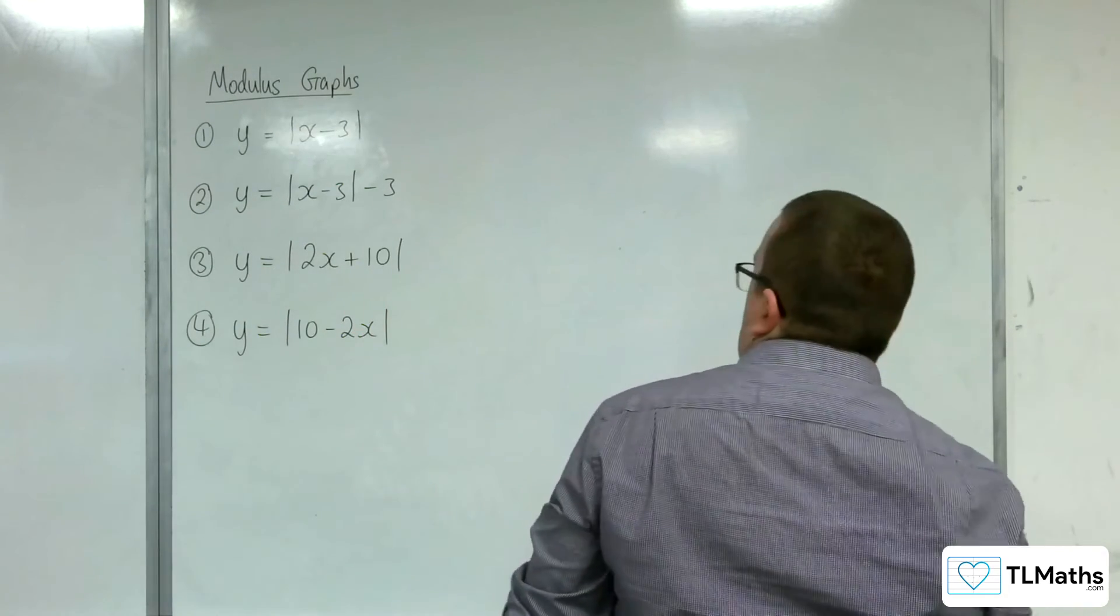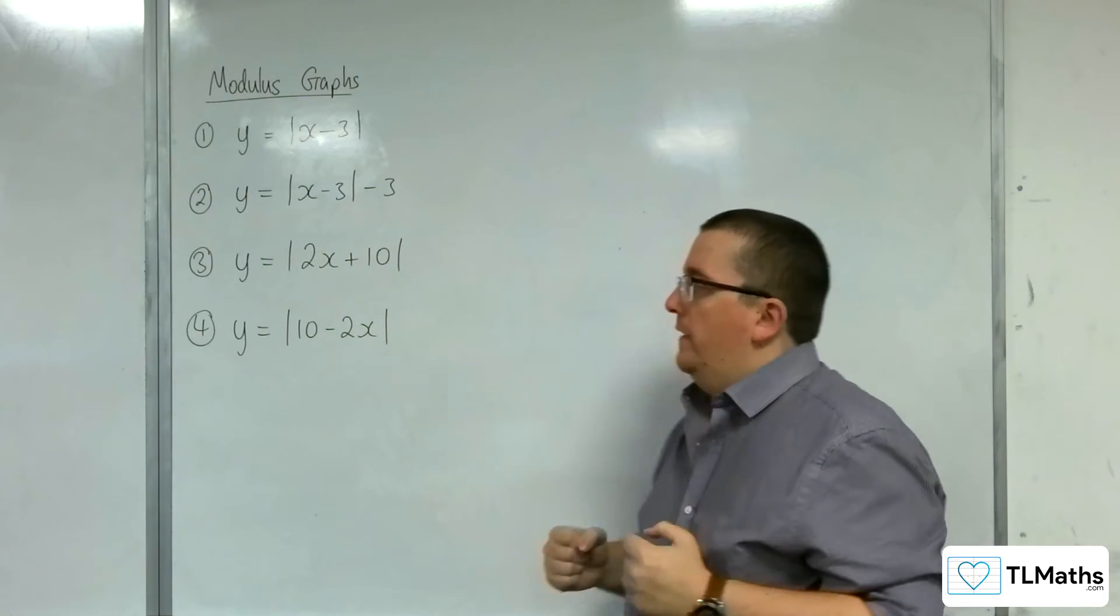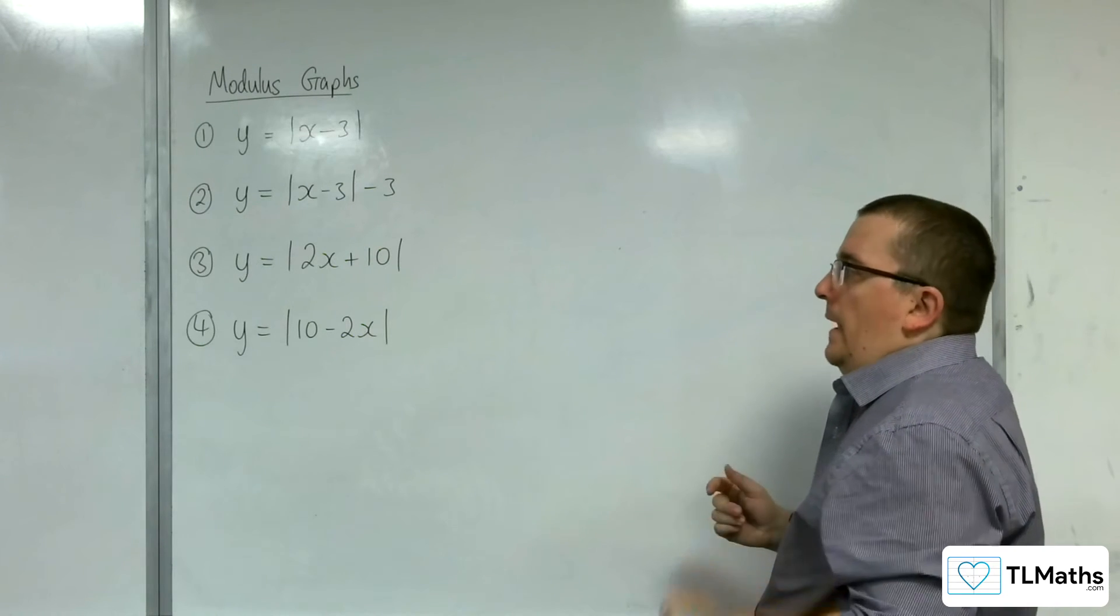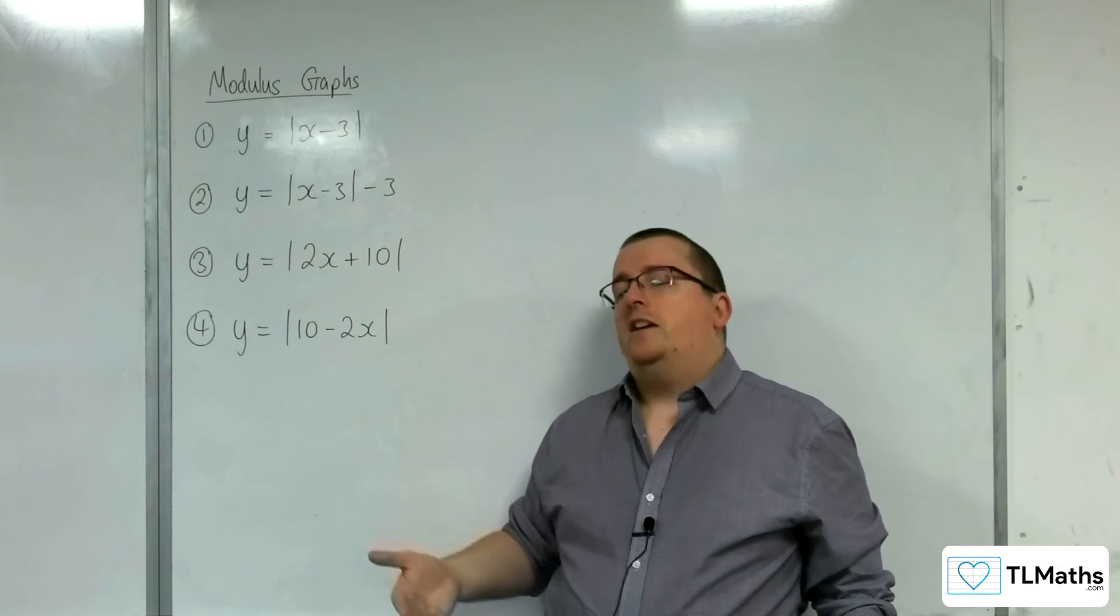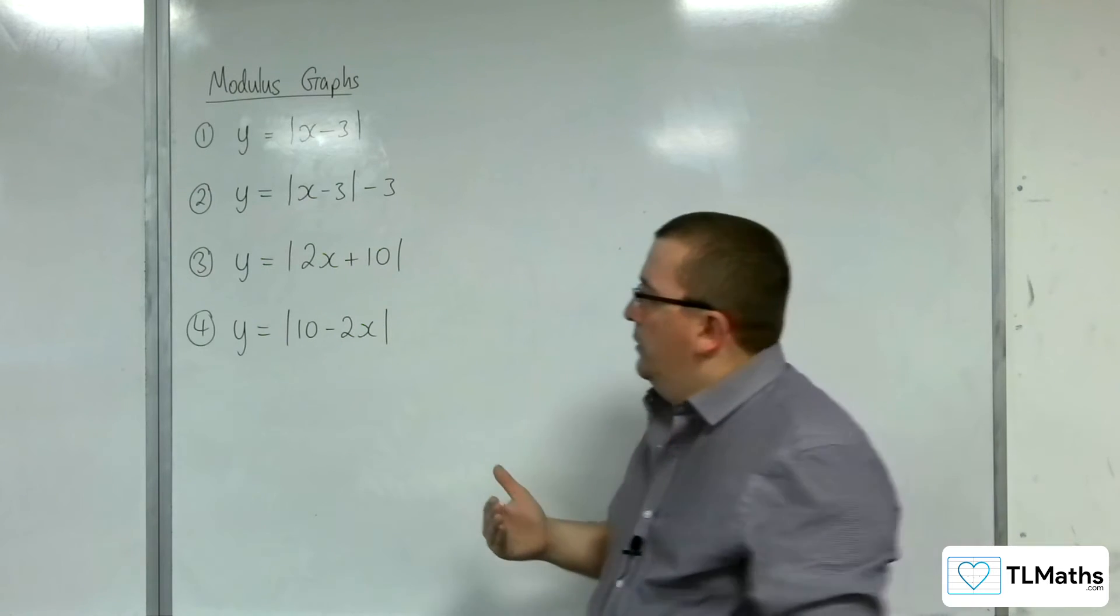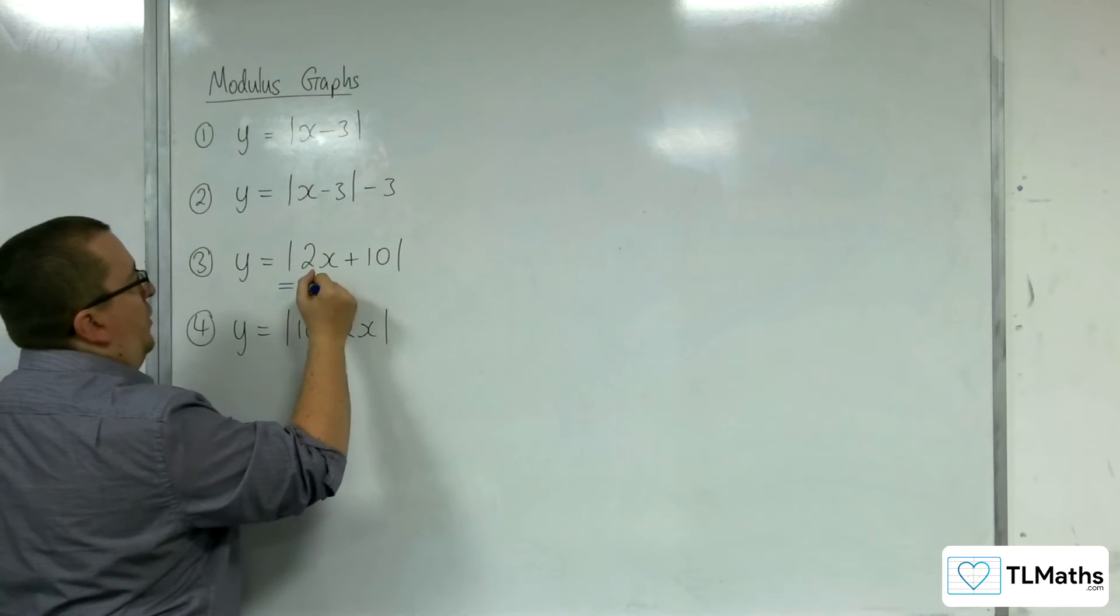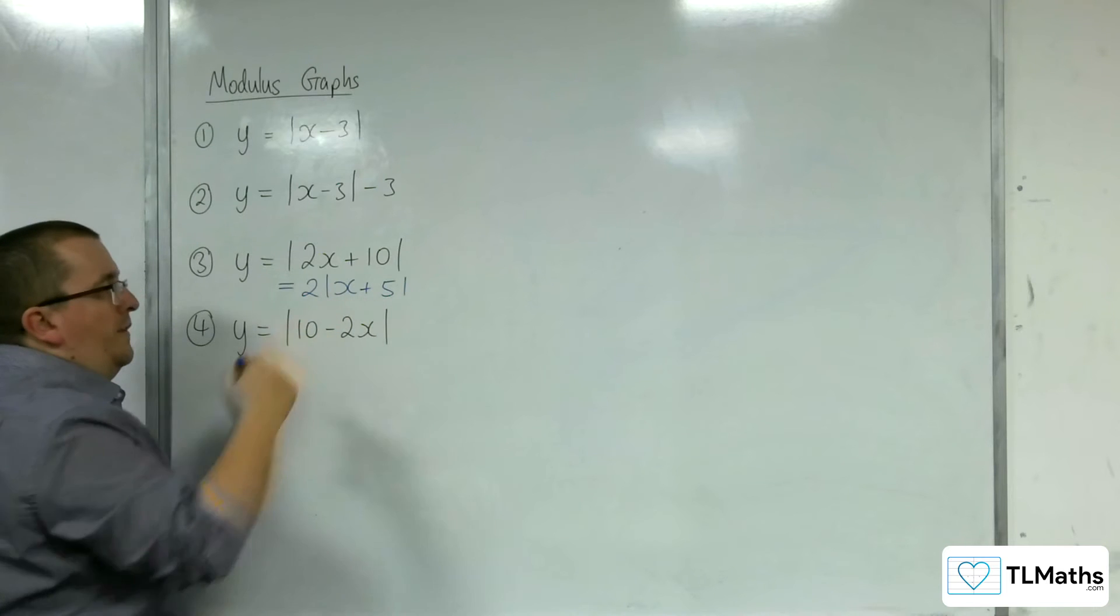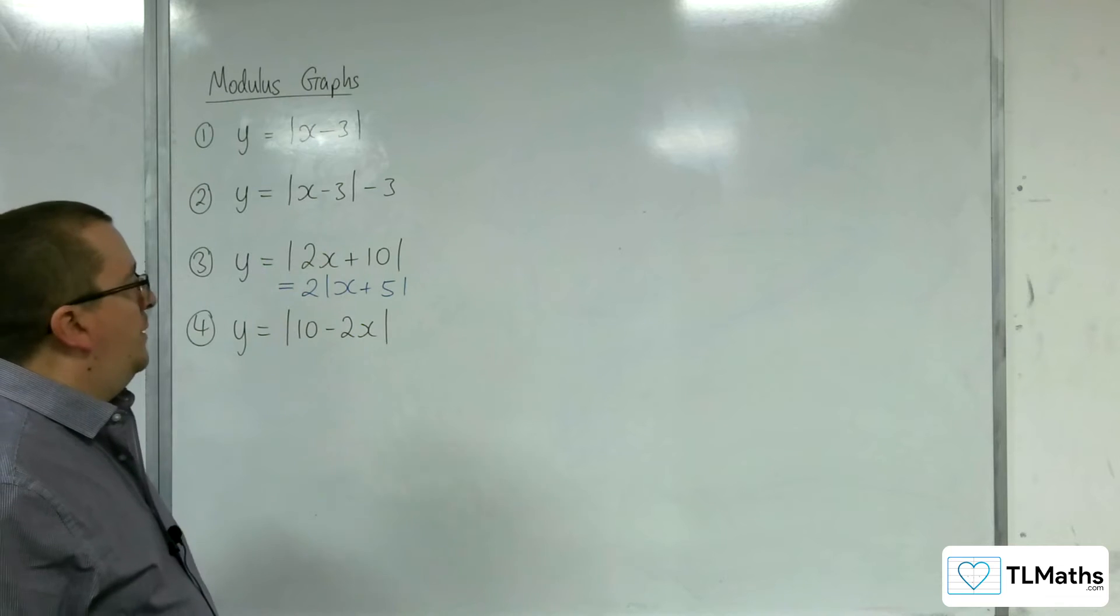Right. Now, number 3. Now, what you can do with things like this, with y equals |2x + 10|, is you are able to treat that modulus relatively like a bracket. You can pull factors out. So it is perfectly fine for you to pull the 2 as a factor out of the modulus, and have 2 lots of |x + 5|. So you can then bring the 2 back in, if required, to get the mod of 2x + 10.